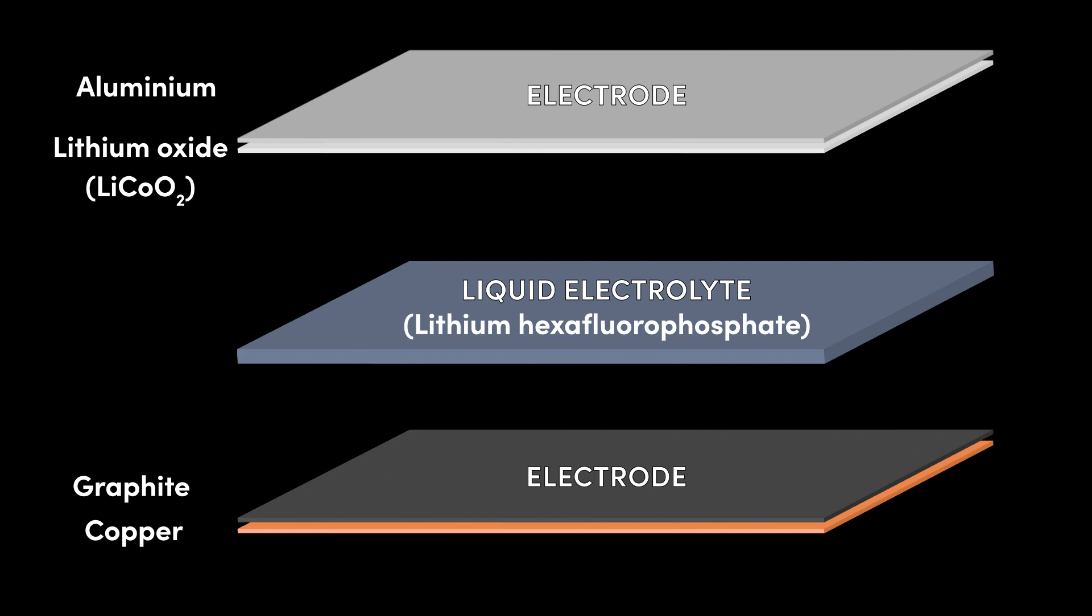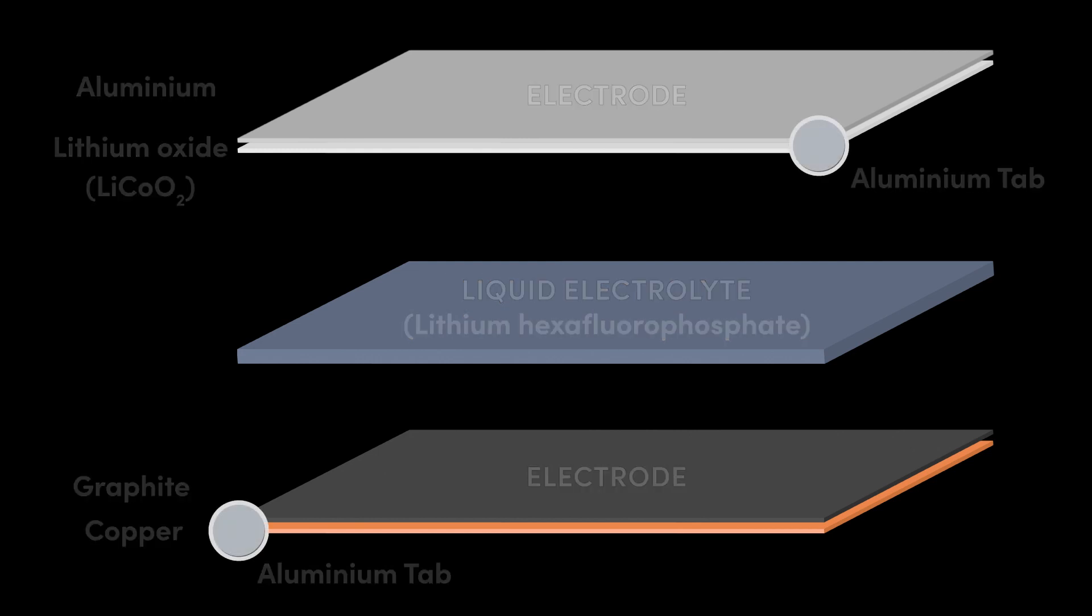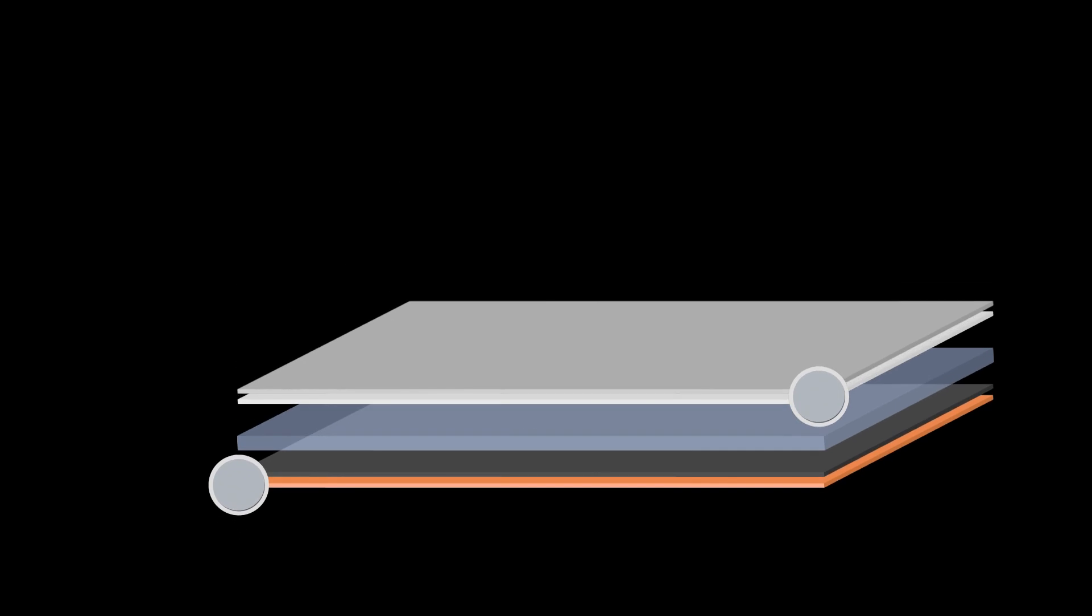The copper and aluminum layers act as current collectors and each attaches to a terminal of the battery cell, which is simply an aluminum tab. We now have all of the necessary components in place to create our electrochemical cell.